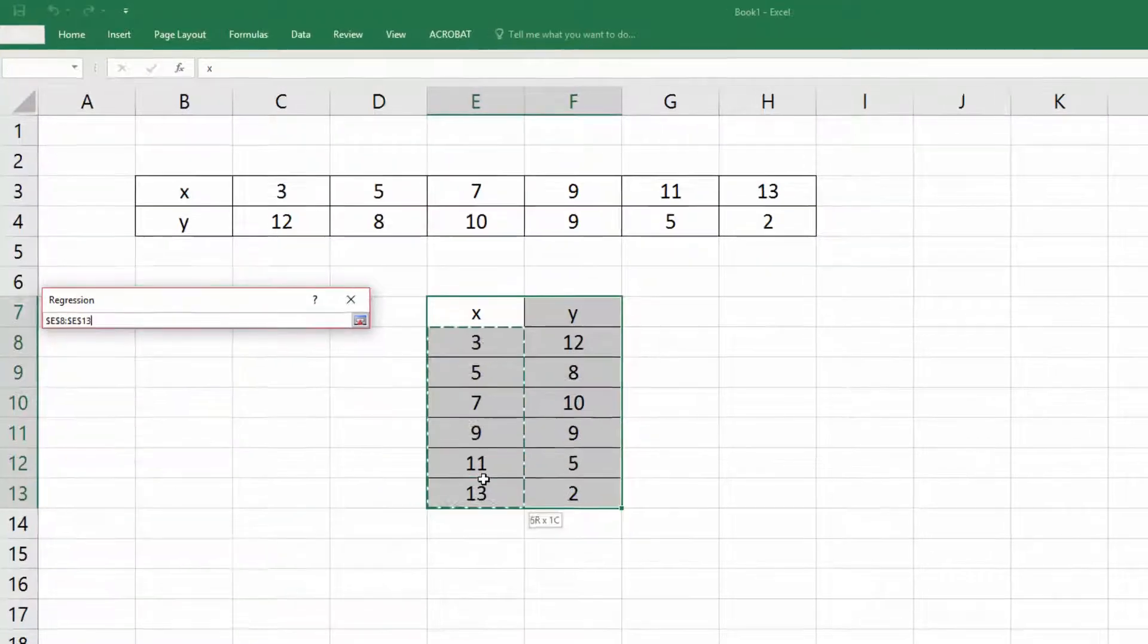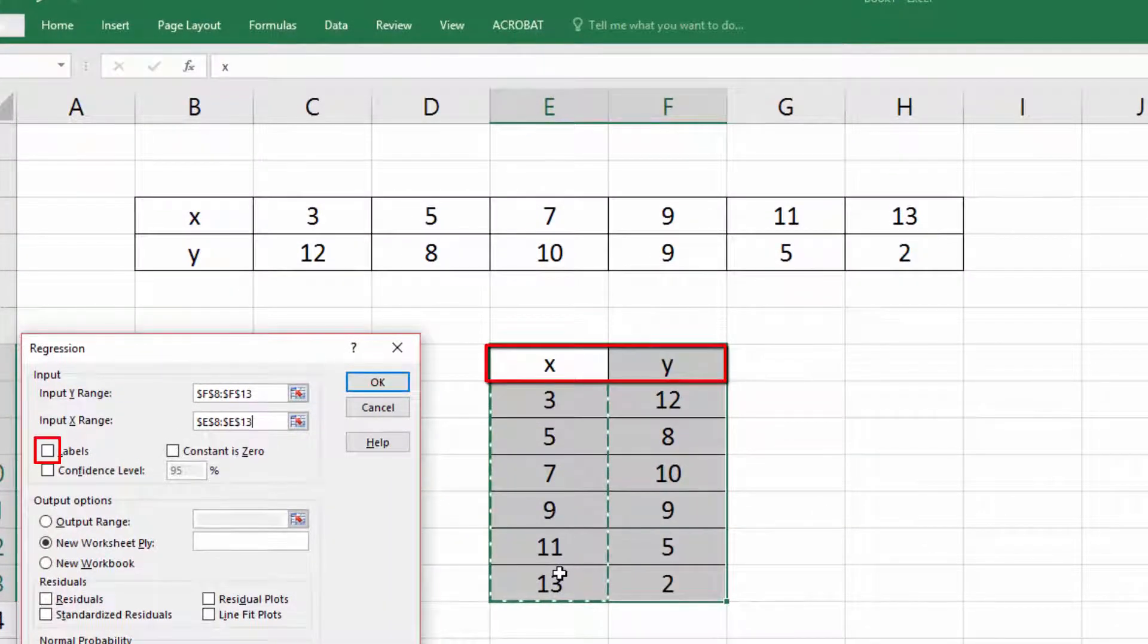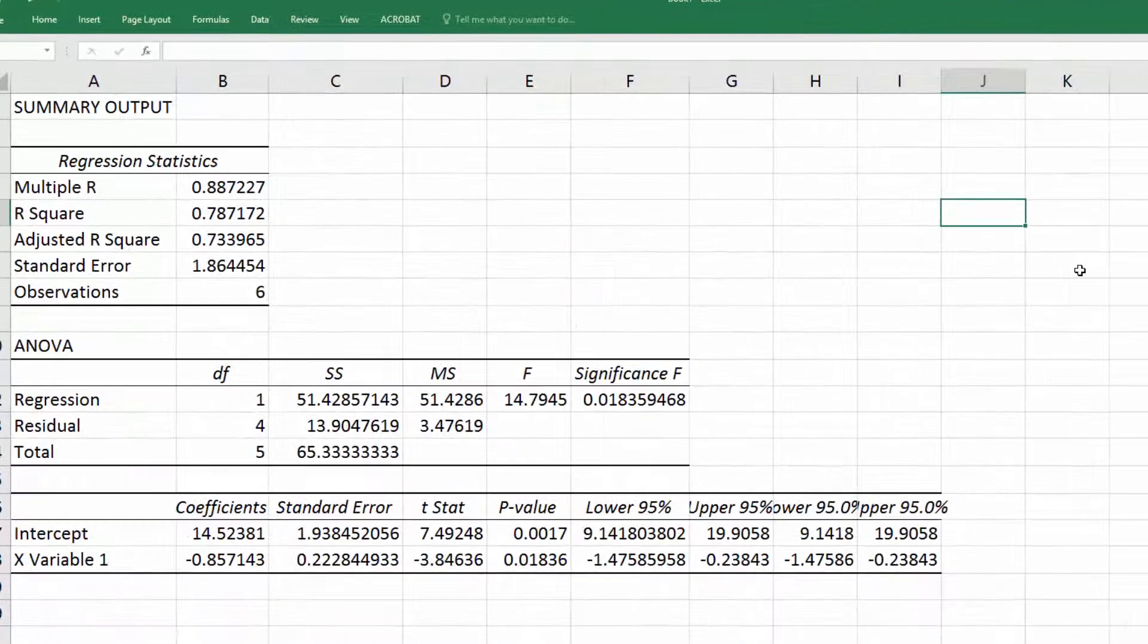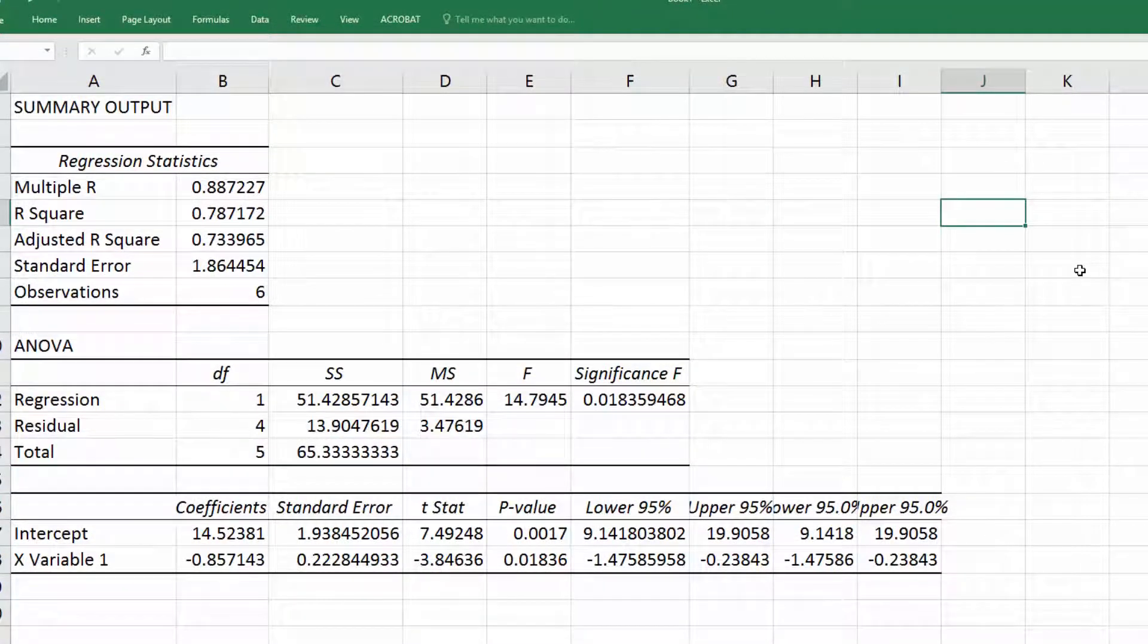Because I did not select the titles, I will leave the label box unchecked and click OK. And here is the output on a different sheet.